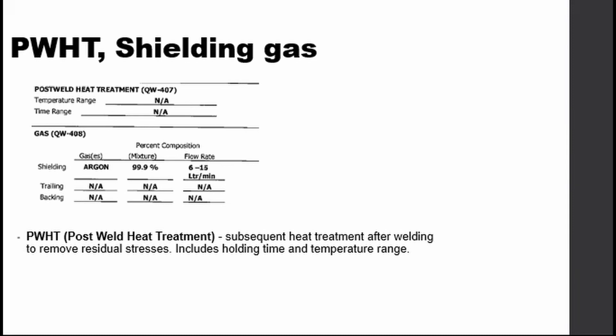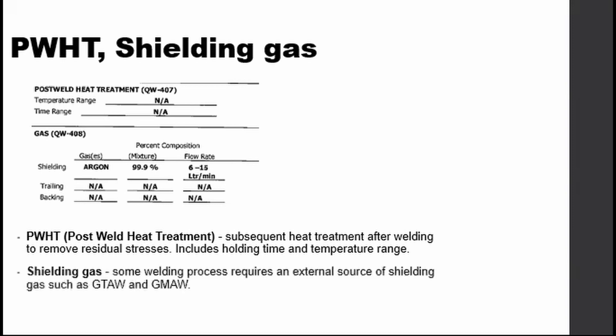For some welding processes, shielding gases are also indicated. These are inert gases such as argon, helium, and CO2, which are commonly used for GTAW and GMAW processes where the shielding gas is an external source for the welding process.